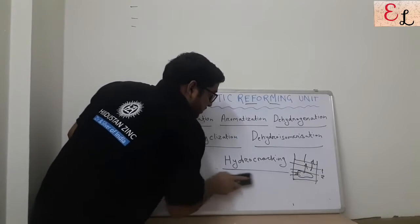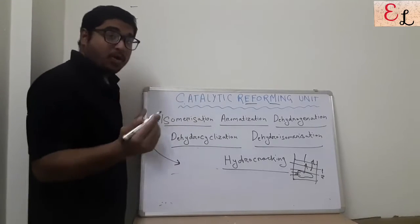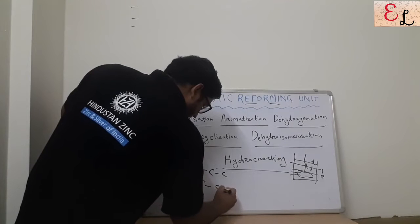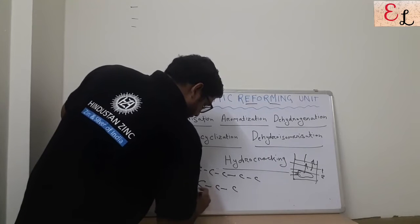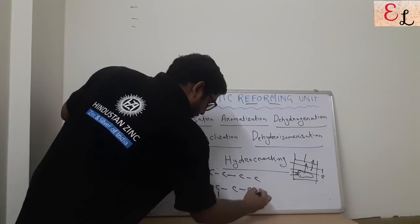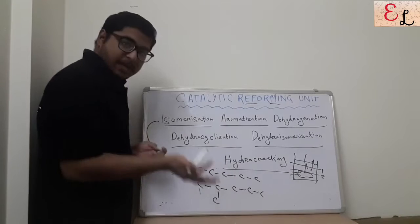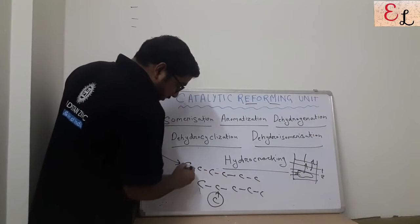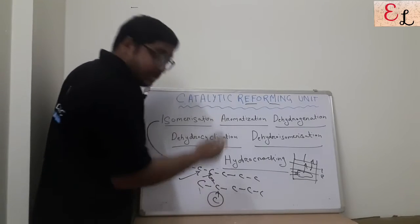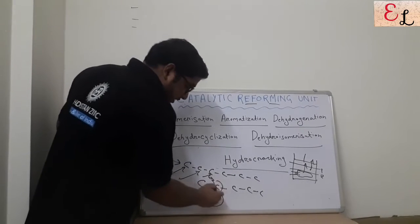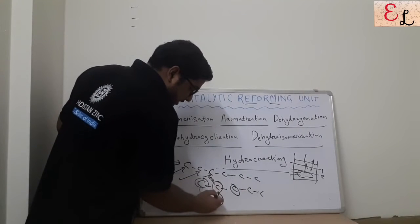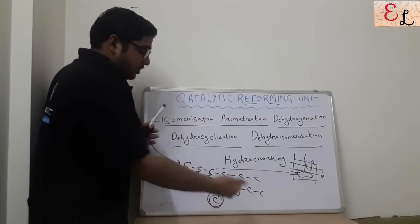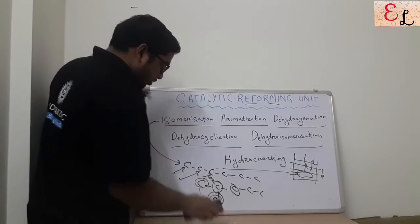The first principle in a catalytic reforming unit is isomerization. A straight chain carbon — say 4 to 5 carbons — is converted into a branched structure with the same number of carbon and hydrogen atoms. The carbon that was easily susceptible to oxygen attack now has decreased susceptibility because the branched chain creates a steric hindrance cloud across the carbon, preventing the easy attack of oxygen that would have been straightforward in a straight chain.